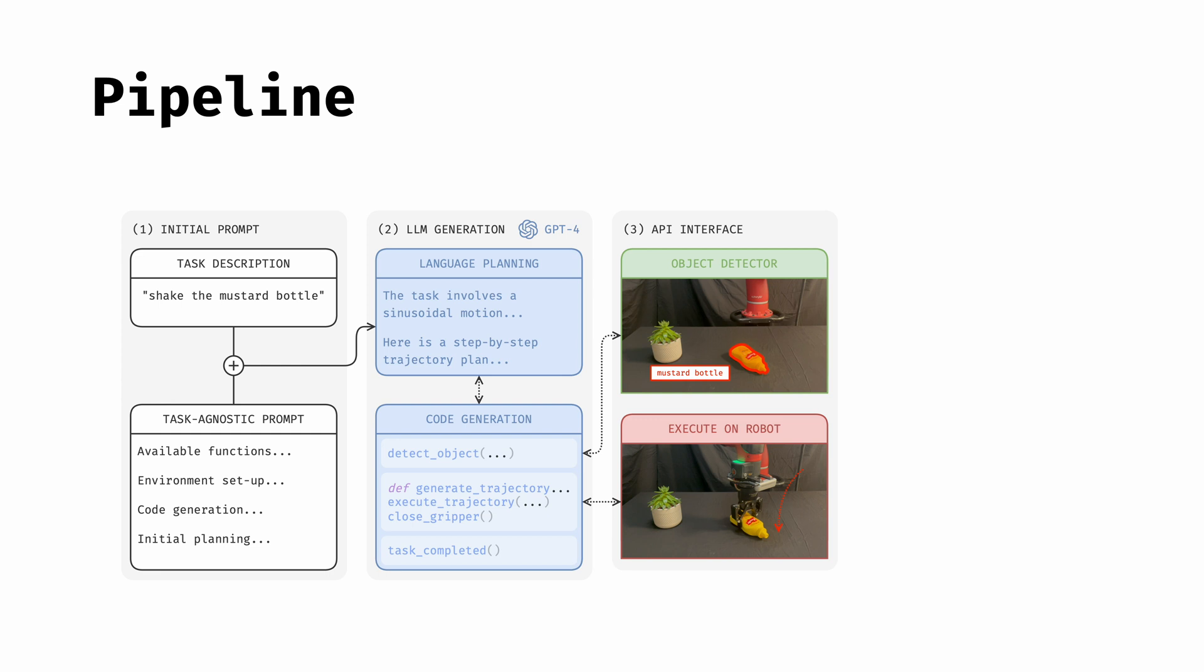With this information, the LLM can generate additional code to execute a sequence of end-effector poses on the robot, as well as either open gripper or closed gripper commands.